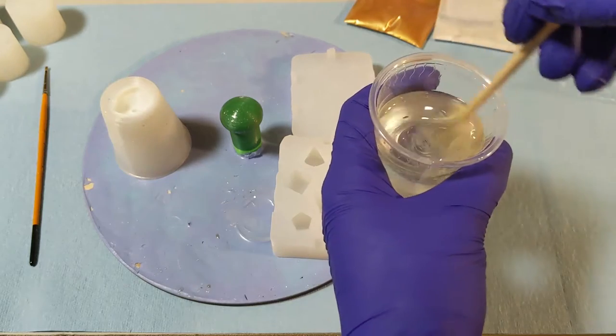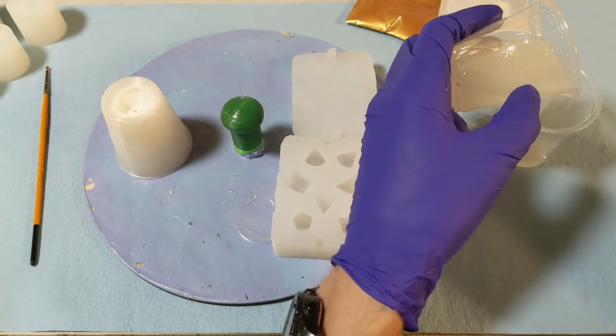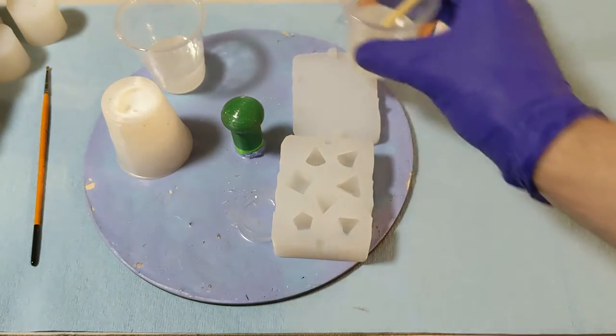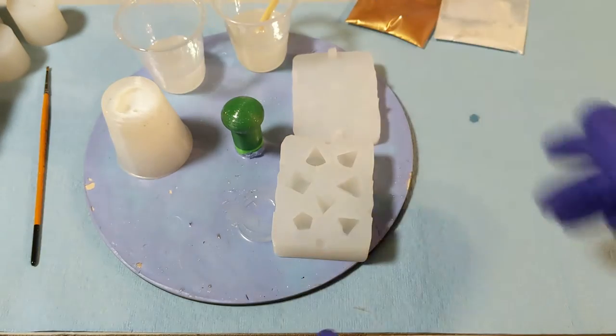I'll mix up my resin first, even though I would recommend mixing it after you do the powder because it takes me longer than I think to try and meticulously paint all those numbers. I set it off to the side to let the bubbles raise and pop.